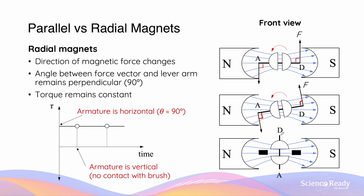However, when the armature is in its vertical orientation, recall that the split-ring commutators will momentarily lose contact with the neighboring brushes. And as a result, there will be no current flowing through the coils of the armature. Because torque relies on the presence of current, if there is no current present, the torque will be zero when the armature is vertically oriented. That's why on the torque versus time graph, although the torque remains horizontal and constant throughout the rotation, it is actually zero — represented by the blank circles — at times when the armature is vertical.